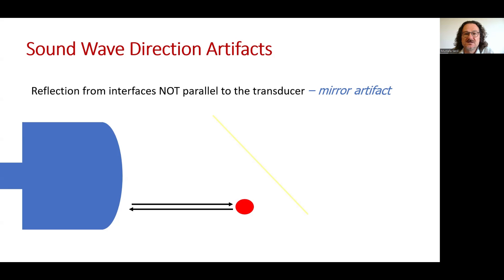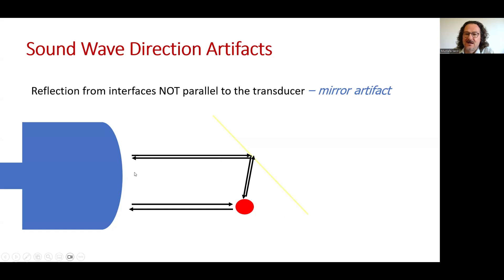Reflections from interfaces not parallel to the transducer may cause mirror artifacts. The transducer transmits and receives sound waves to obtain an image in a certain time. Some waves reflect from the non-parallel interface, reach the object, go back, reflect again, and reach the transducer. Since the transducer uses time to determine depth, the object is imaged deeper and not in its original place. This is called the mirror artifact.